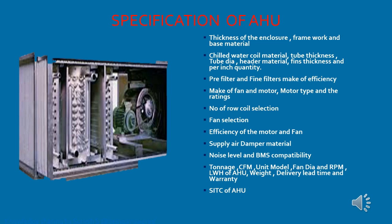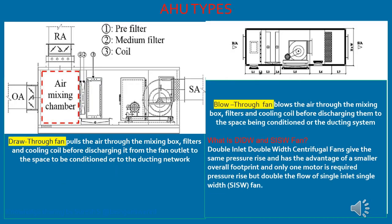Further specifications to check include: supplier, damper material, noise level, BMS compatibility, tonnage, CFM, unit model, fan diameter, RPM, and the length, width, and height of the AHU, weight, delivery time, and warranty — for supply, testing, and commissioning of the AHU. These are the basic parameters which need to be confirmed in the AHU specification while placing an order.